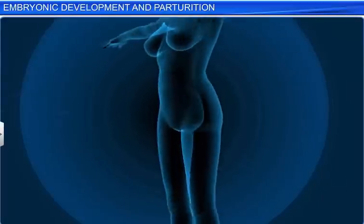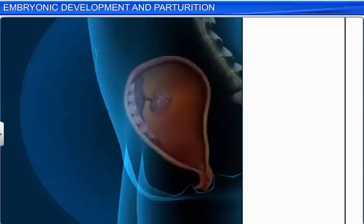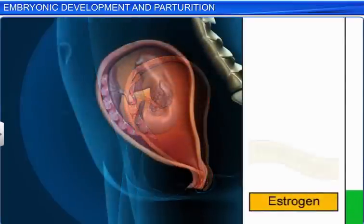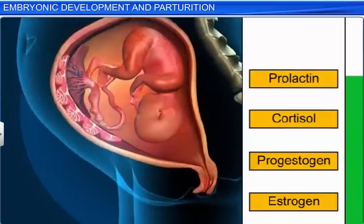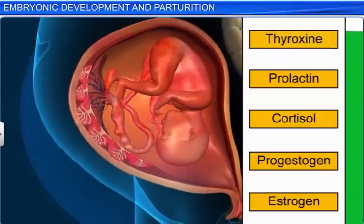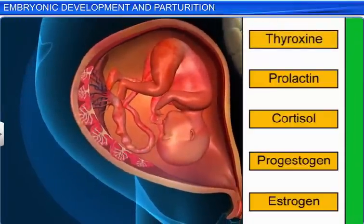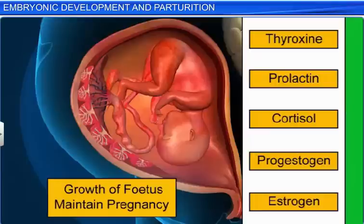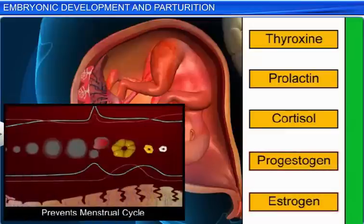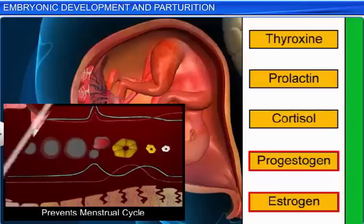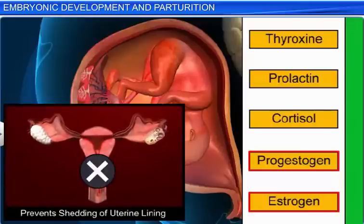Apart from the secretion of these hormones, the levels of other hormones such as estrogen, progestogen, cortisol, prolactin, and thyroxine also rise rapidly in a pregnant woman's body. These hormones support the growth of the fetus as well as maintain the pregnancy. Increased levels of progestogen and estrogen, for instance, put the menstrual cycle on hold and prevent the shedding of the uterine lining, which is embedded with the developing fetus.